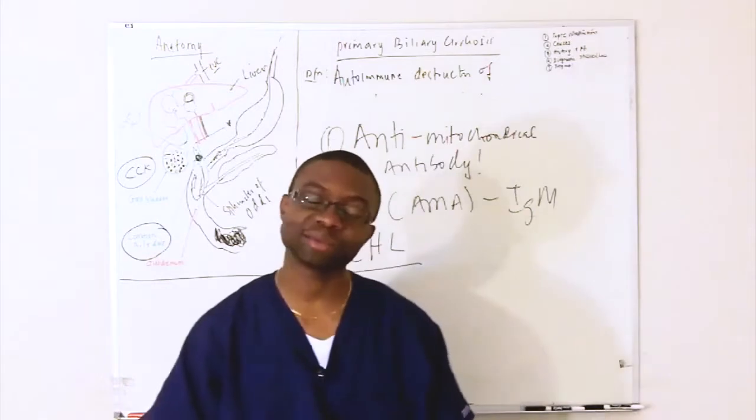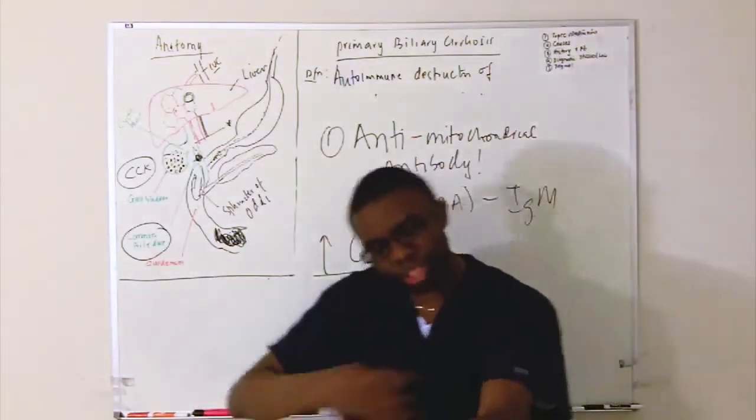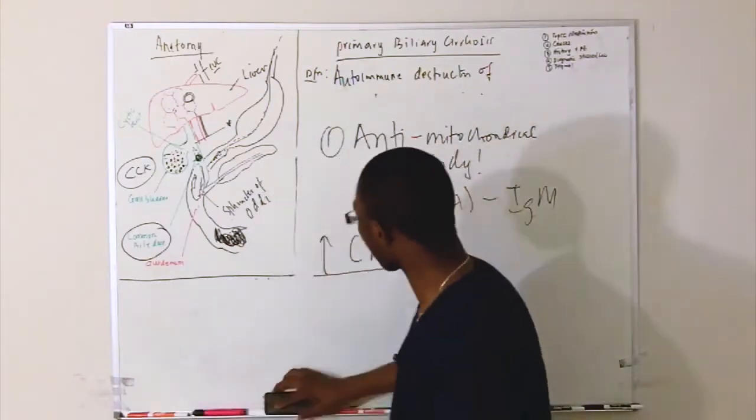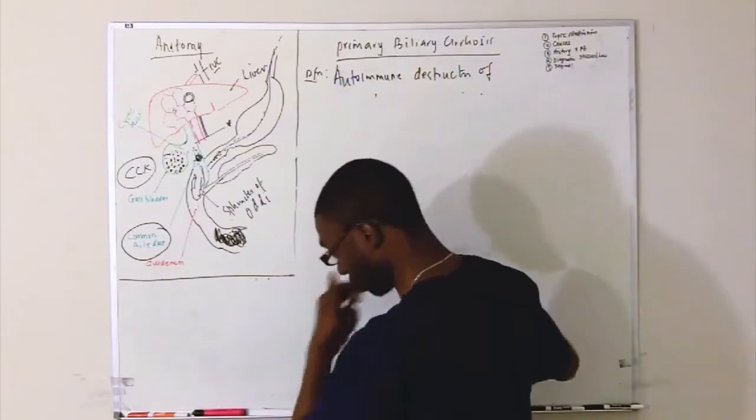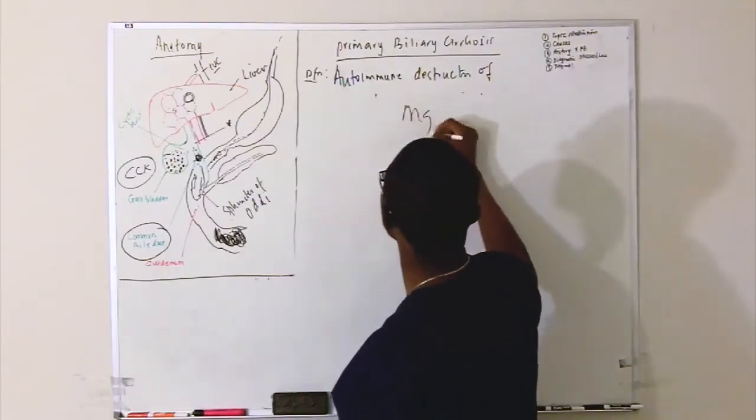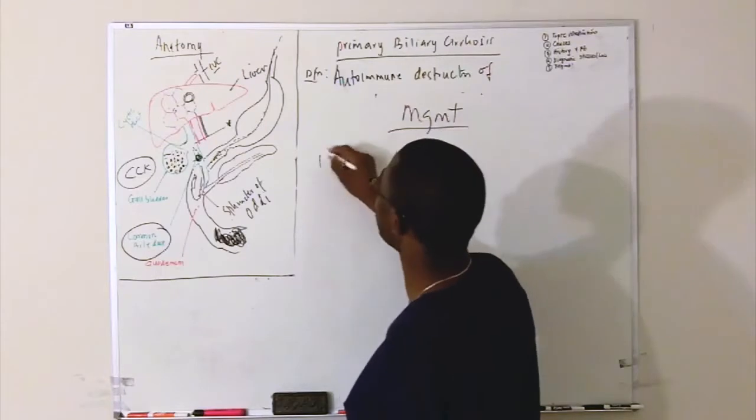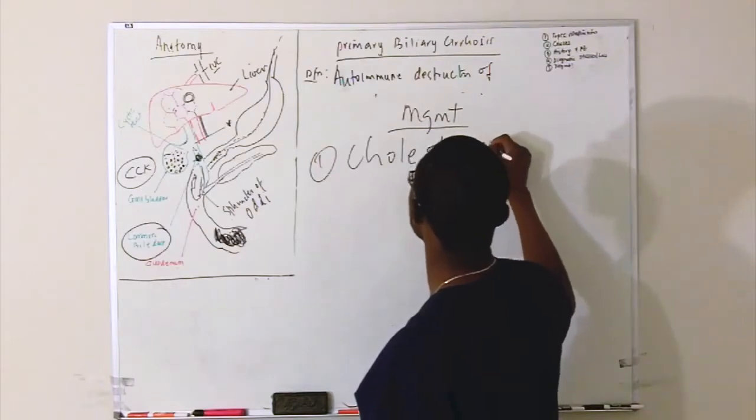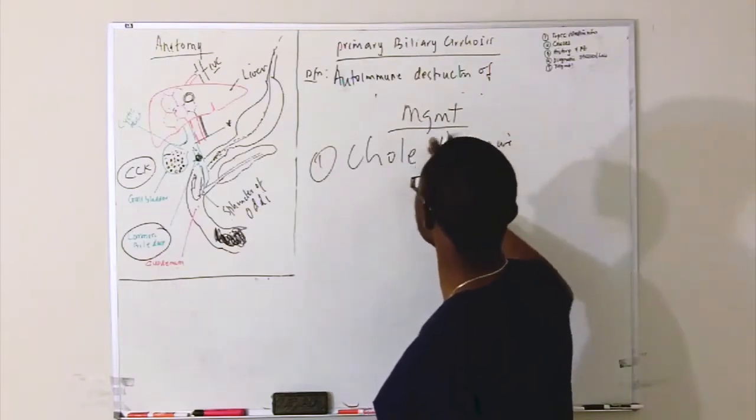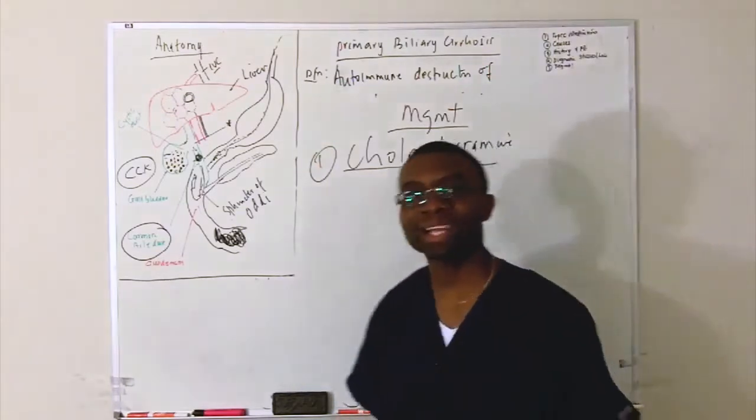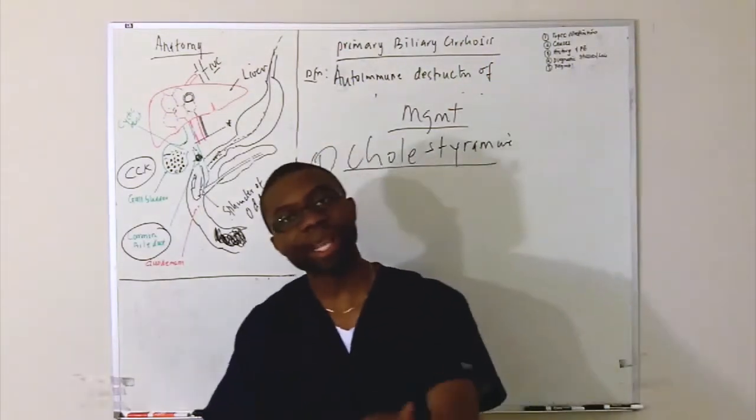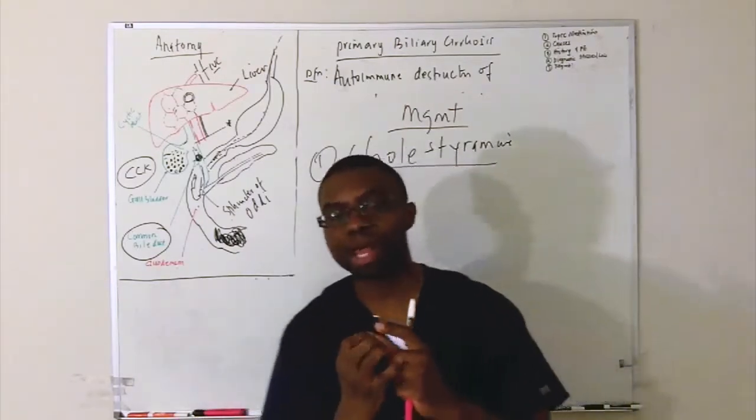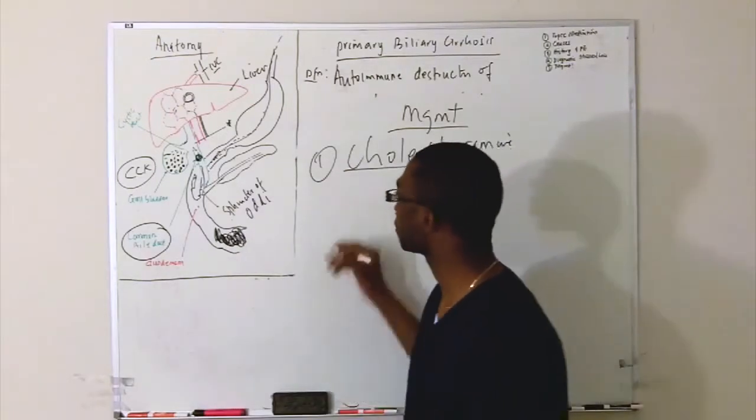How do we treat it? It's symptomatic. They're itching a lot. We've got a drug for that. Cholestyramine. I always like this interesting name, cholestyramine. This is a bile acid sequestrant because it's the bile acid on the skin that's causing irritation and itching. So when you take cholestyramine, it binds to those bile acids, you poop it out.